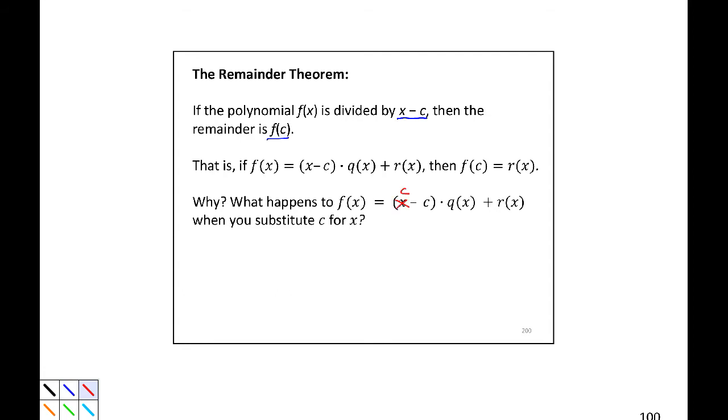c minus c times q of x plus r of x. c minus c is 0, so 0 times our quotient is 0, and we're left with r of x. So let's apply this briefly.